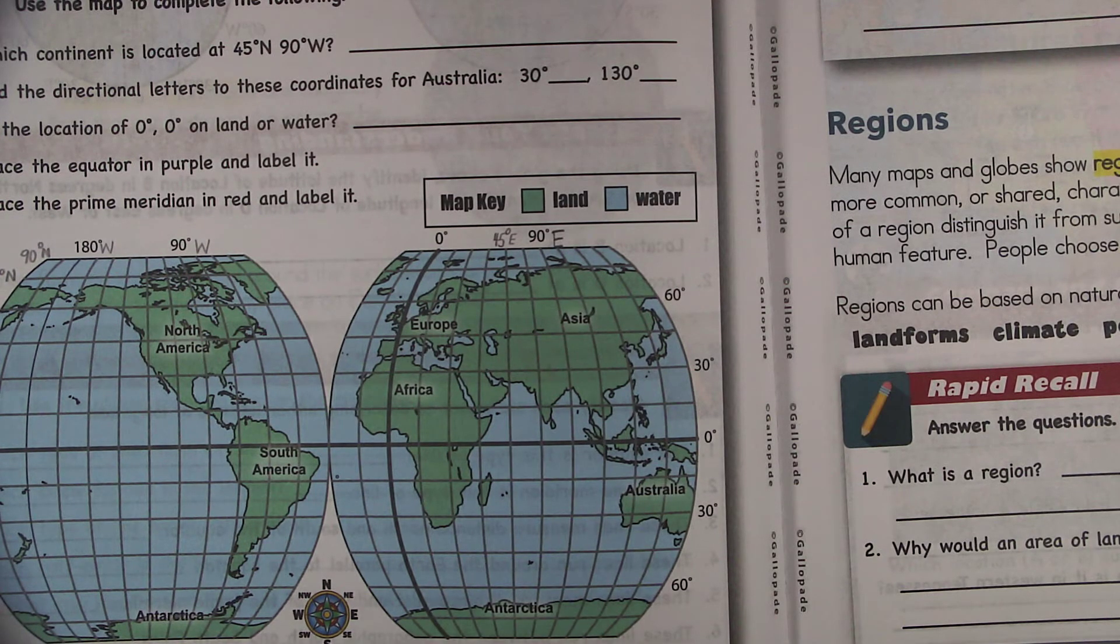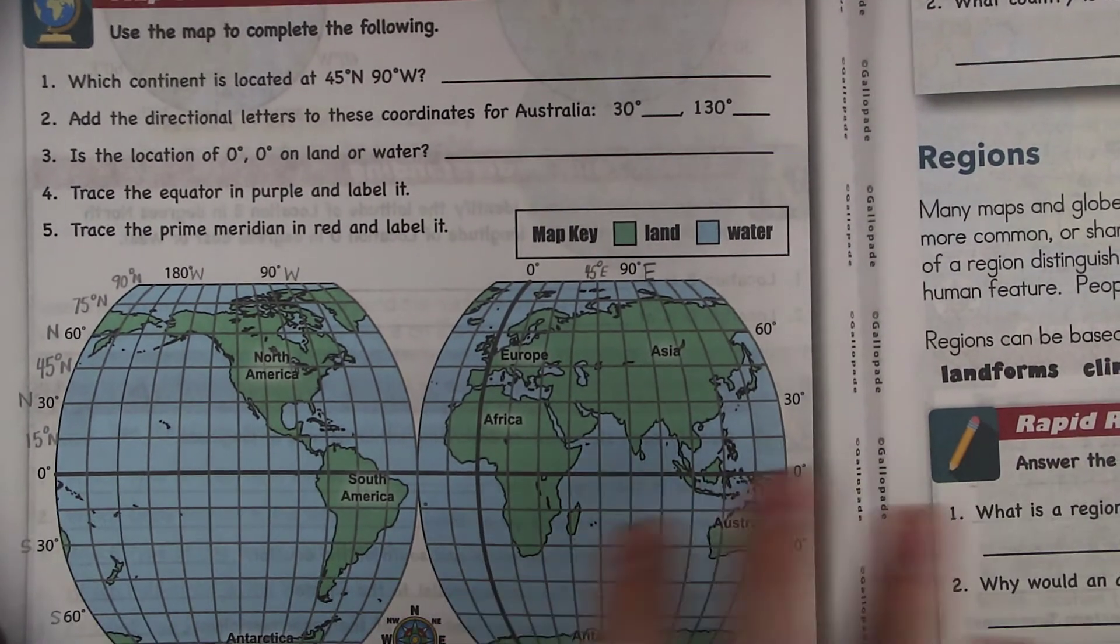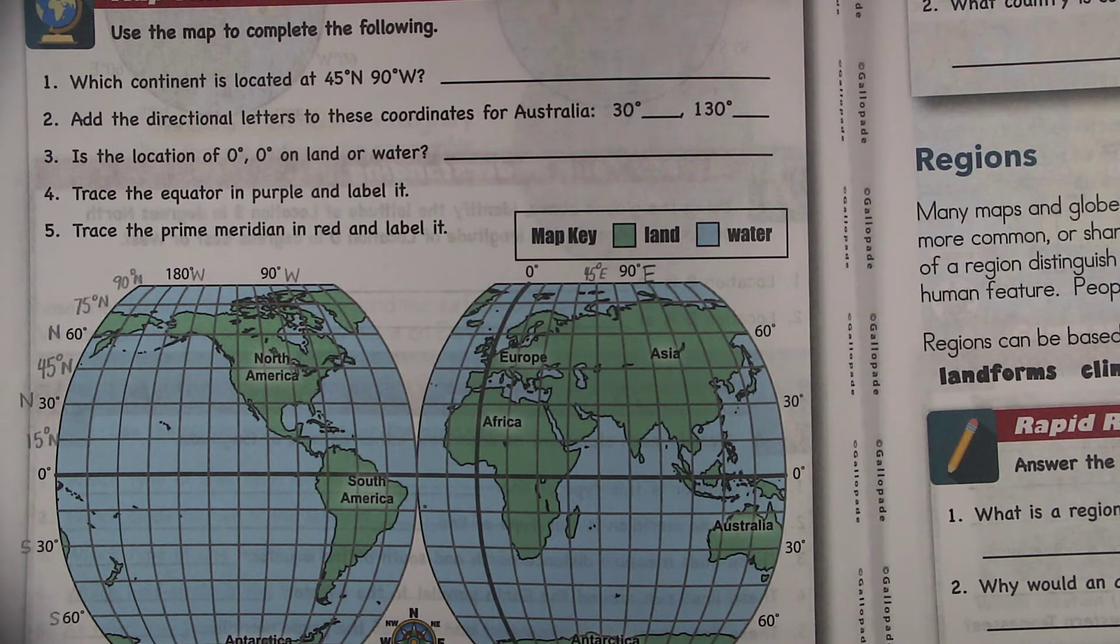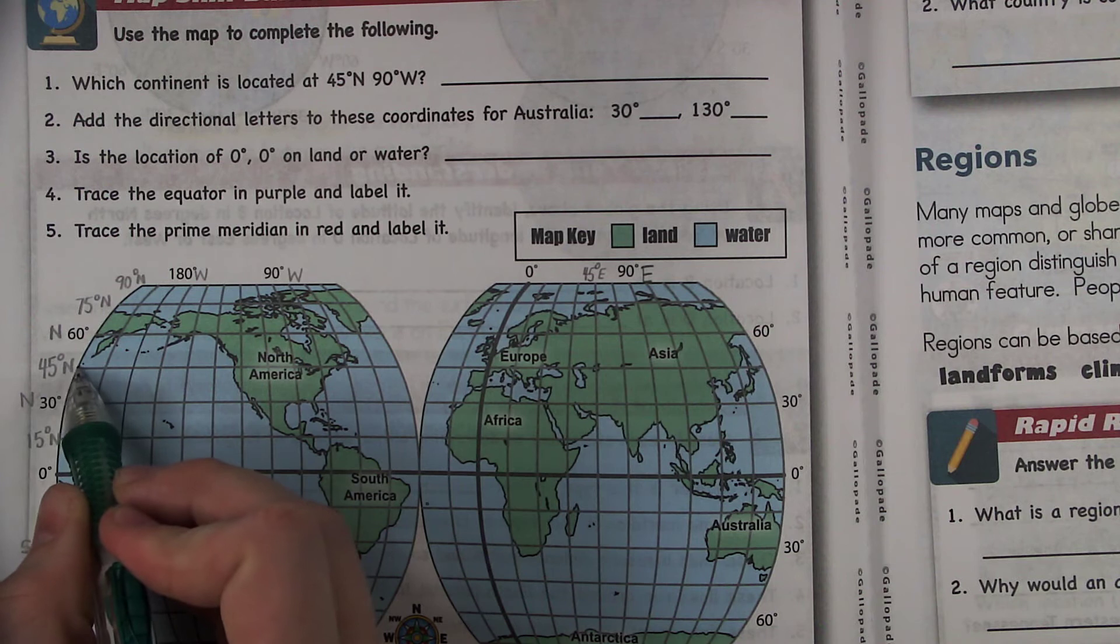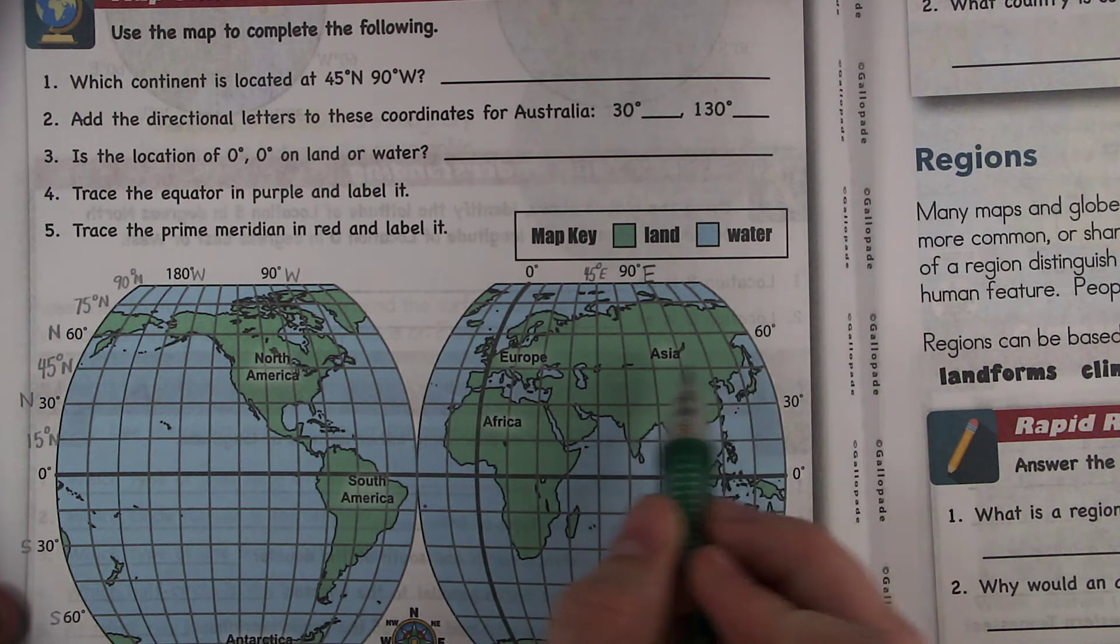So I know this is a bit overwhelming, but I want you to try to do numbers one through five. I started you out on number one. We'll go ahead and continue with that. So 45 degrees north, 90 degrees west. Well, 45 degrees north, that was a bit of a hard one because we had to label it ourselves. So that would be this horizontal line right here.